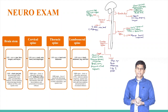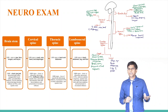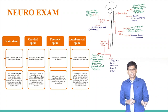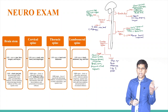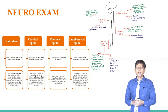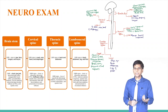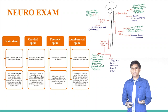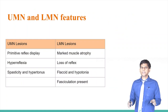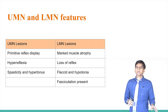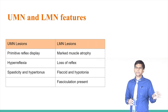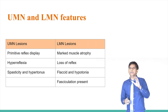At the thoracic spine, lower motor neuron signs involve the back and abdomen, and upper motor neuron signs include loss of superficial abdominal reflex, increased deep tendon reflexes in the lower extremities, and spastic tone. At the lumbosacral spine, signs include back, abdomen, leg, and foot involvement, with clonic or abnormal deep tendon reflexes, spastic tone, and weak atrophic limbs. In summary, upper motor neuron lesions present with primitive reflexes, hyperreflexia, spasticity, and hypertonus, while lower motor neuron lesions show marked muscle atrophy, loss of reflexes, flaccidity, hypotonia, and fasciculations.